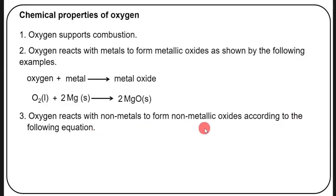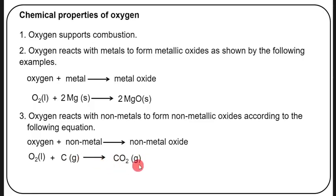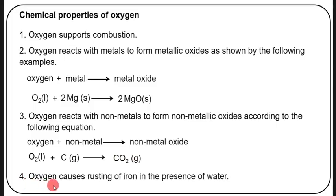Oxygen reacts with nonmetals to form nonmetallic oxides. For example: O₂(g) + C(s) → CO₂(g) — carbon dioxide is a nonmetallic oxide. Another chemical property of oxygen is that it causes rusting of iron in the presence of water. These are the chemical properties of oxygen.